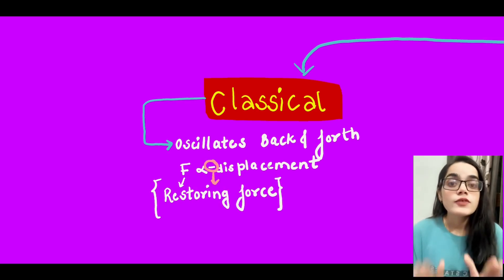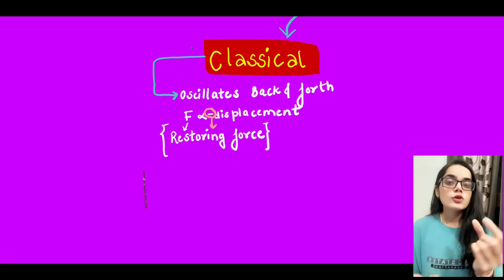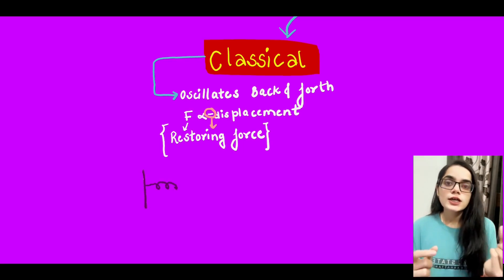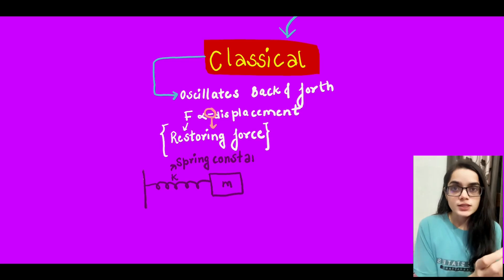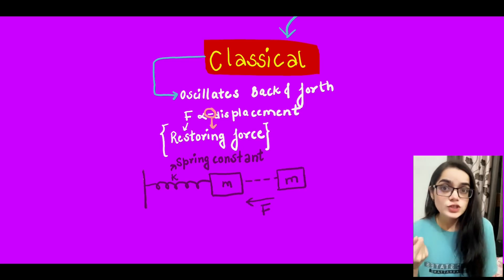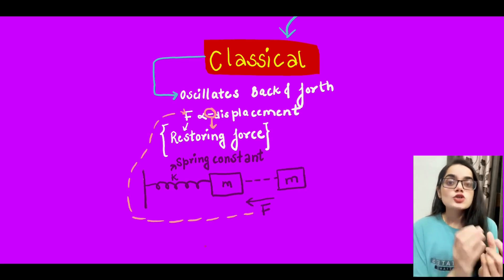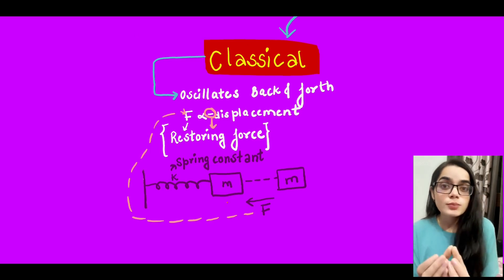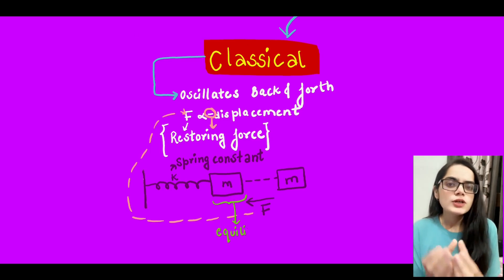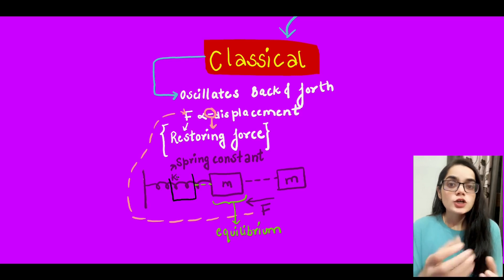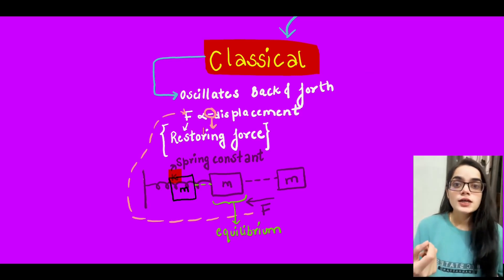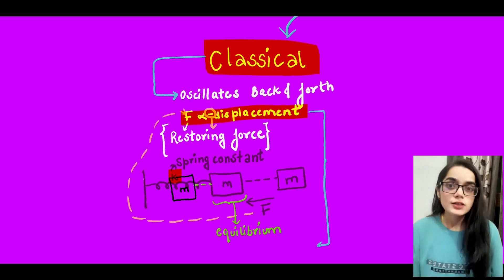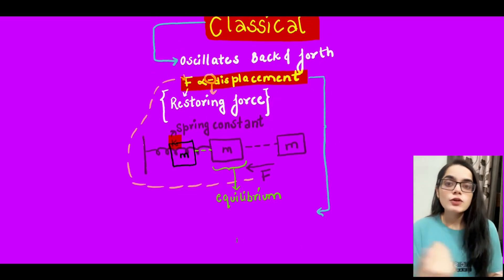For example, in a mass-spring system, if you stretch the mass to a certain distance x, you change its position. The spring will try to pull the mass back toward it. The whole system tries to return to equilibrium but cannot stop there, so it goes back, gains energy, comes forward, and oscillates around the equilibrium position.